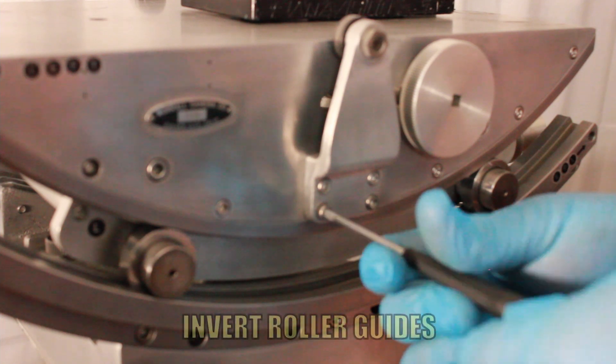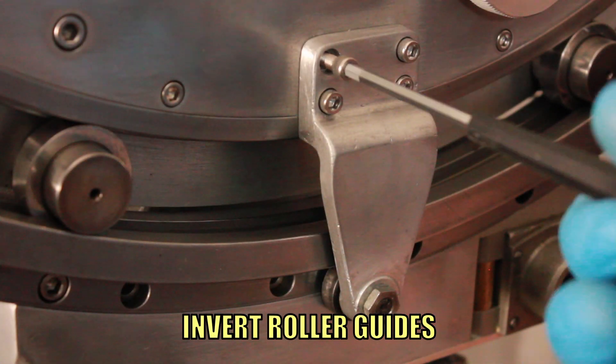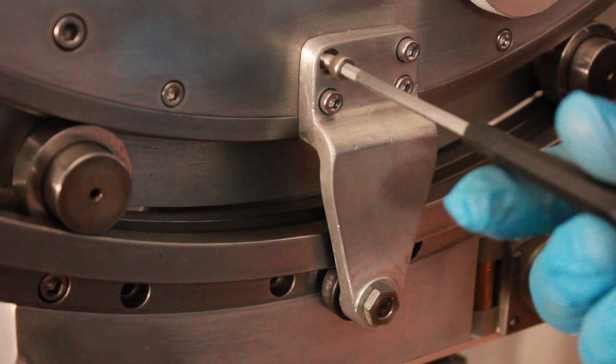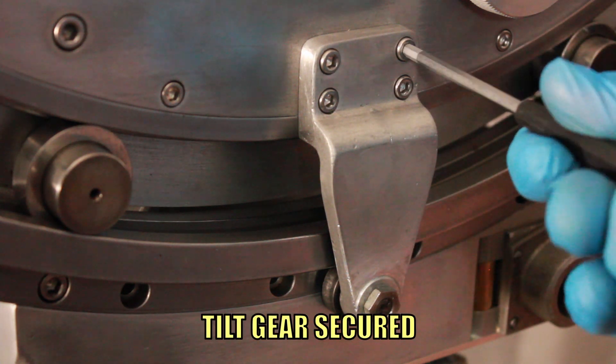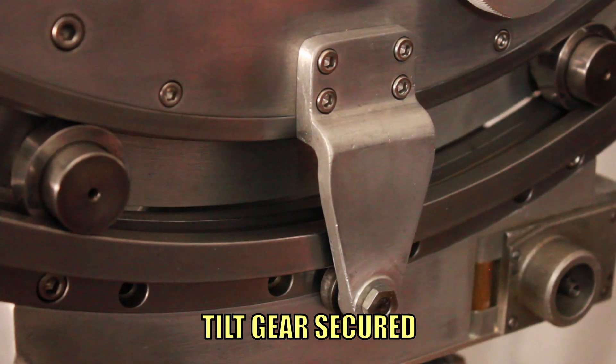Use an Allen wrench to remove roller guides. Invert them and reattach. Do this on both sides. Now the tilt wheel is secure and will not fall off.